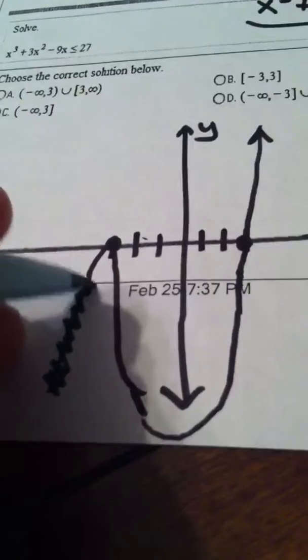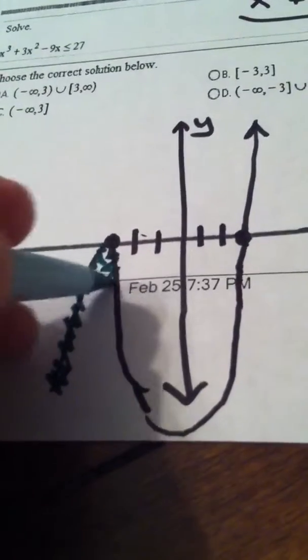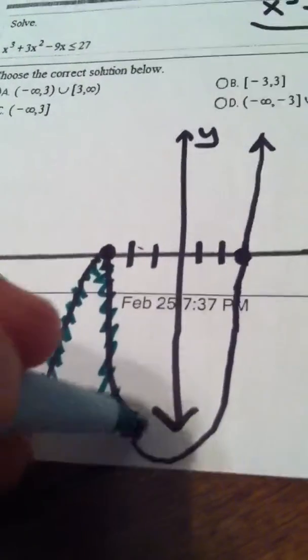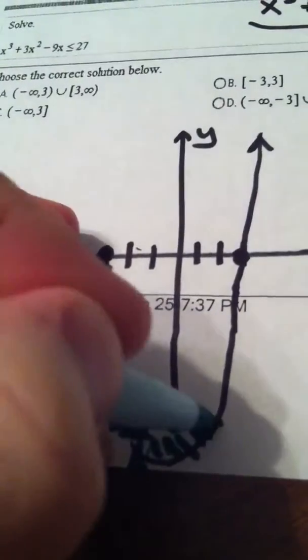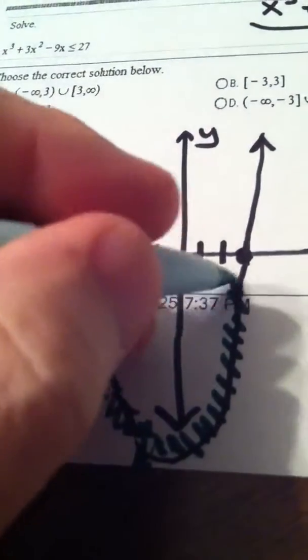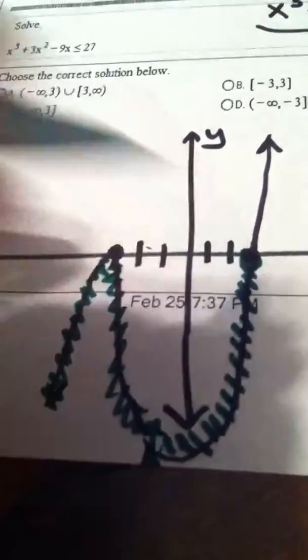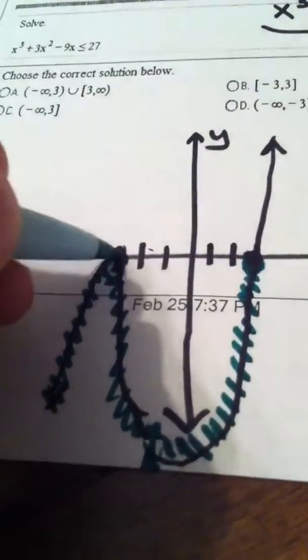So I'm shading in everything in these quadrants. Okay? You see that? Color, color, color. My paper's moving, but you get the idea. And of course, I'm going to include the zeros because they're part of the answer.